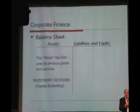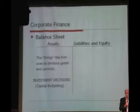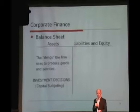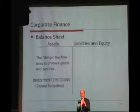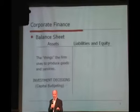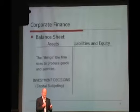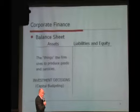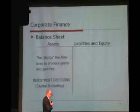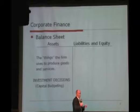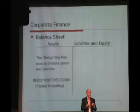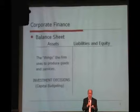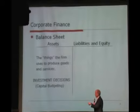We have the things that corporations own and use to make goods, produce services, and sell those in an effort to make profit — to make money for their investors. The left-hand side of the balance sheet is a result of the firm's investment decisions, and we call that capital budgeting.